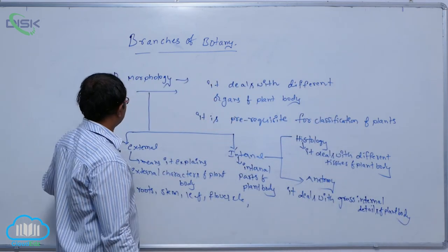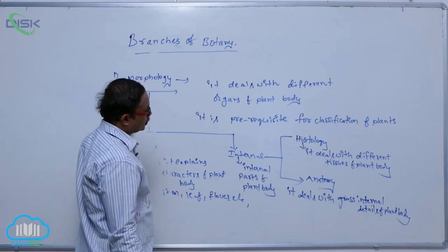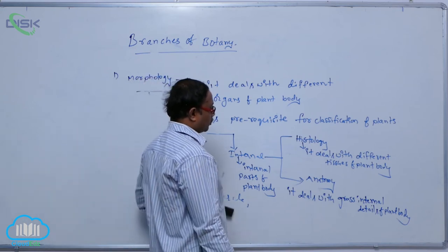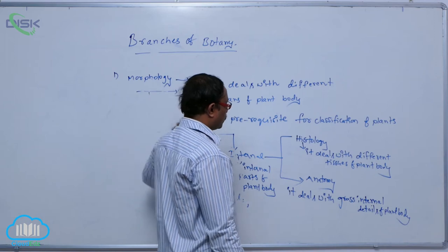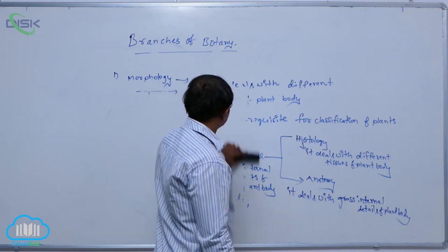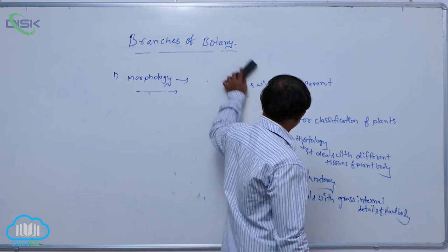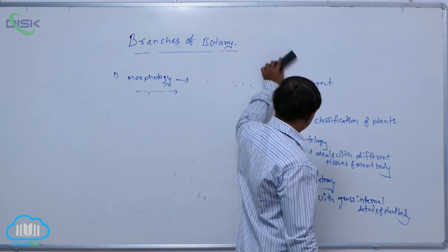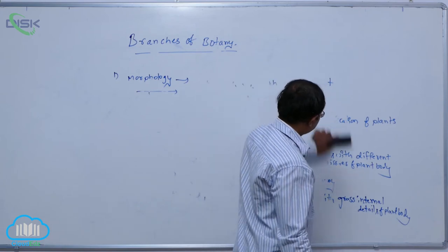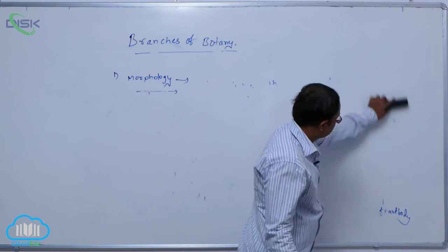In anatomy, the gross internal details of the plant body — such as transverse sections (T.S.) of stem, root, and leaf — are explained.